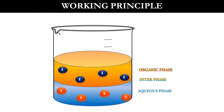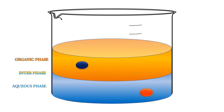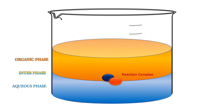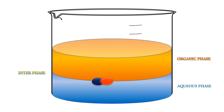Let's see the working principle of reactive extraction. Consider the organic phase and the aqueous phase as shown in the figure. The blue circles represent extractant molecules in the organic phase, and the red circles represent the solute molecules in the aqueous phase. The extractant molecule in the organic phase reacts with the solute molecule in the aqueous phase to form a reaction complex.